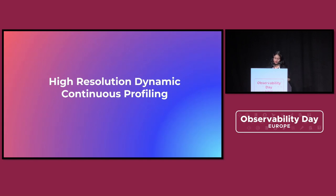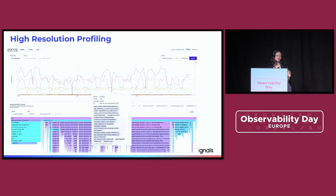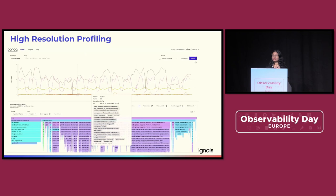Now let's move on to high-resolution dynamic continuous profiling. What I mean by high-resolution profiling is that we get data with a very high level of granularity. You can't just see high-level data — oh, this is the CPU core that crashed, or getting an idea that this is the program that crashed. Maybe it's the garbage collector, maybe there is a memory leak. We want data that's more refined: we want to see all the processes on our machine, the process name, the process ID, the name of the binary — not just as you name it, but as per your proc API.